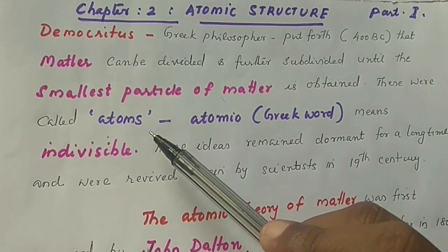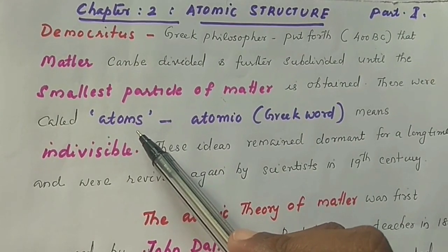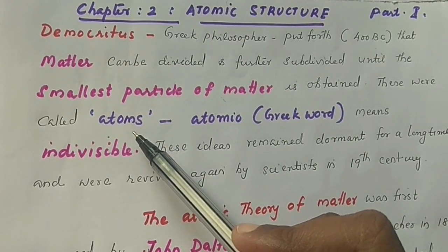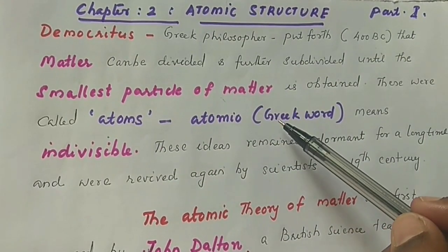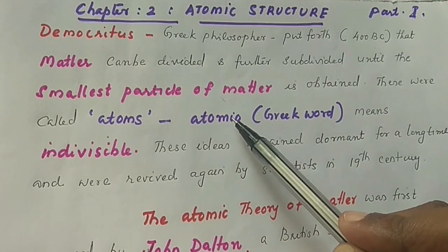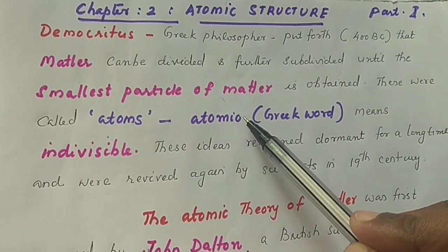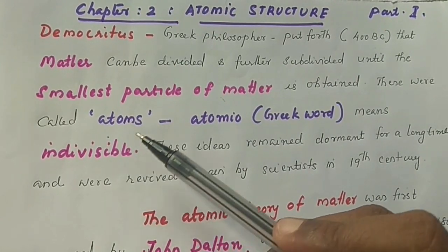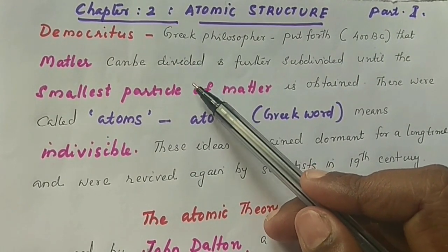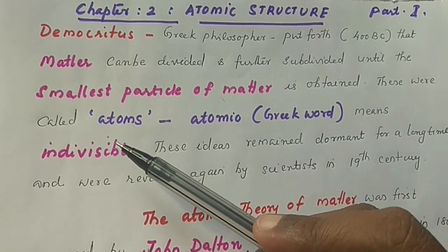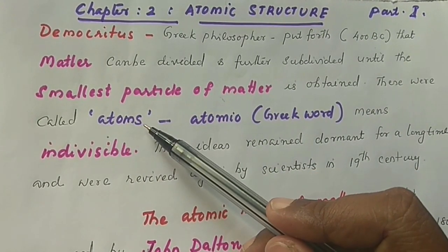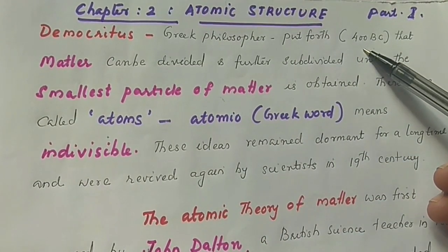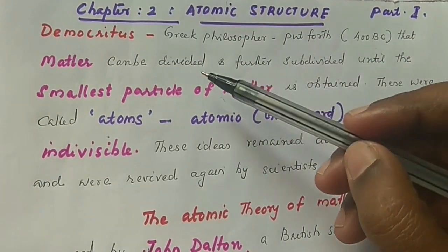These smallest particles were called atoms, meaning indivisible. 'Atomio' means indivisible. This was proposed by the Greek philosopher Democritus in BC 400.